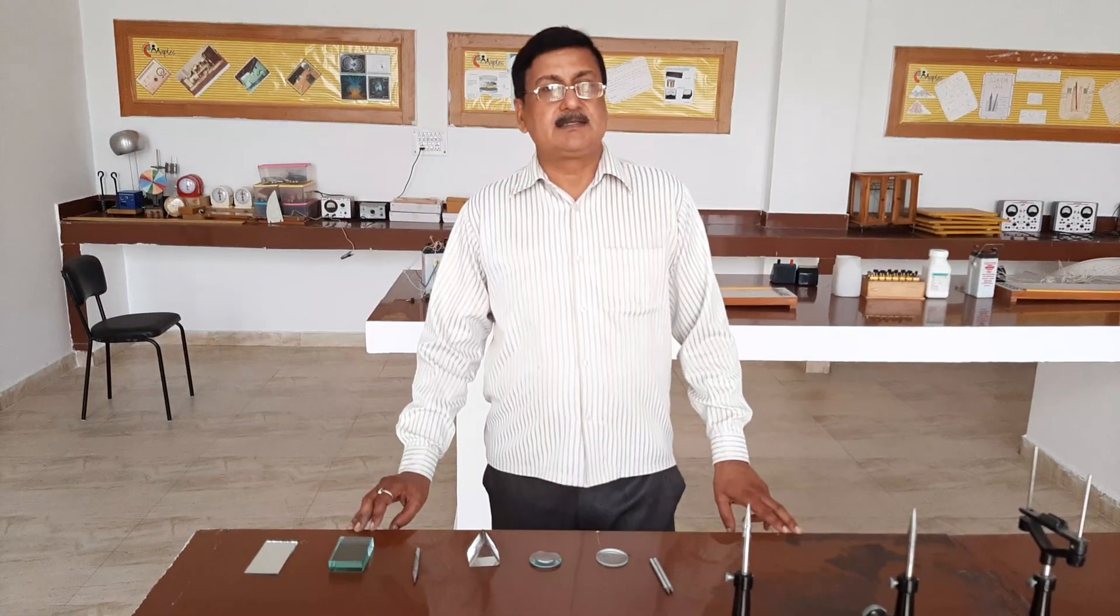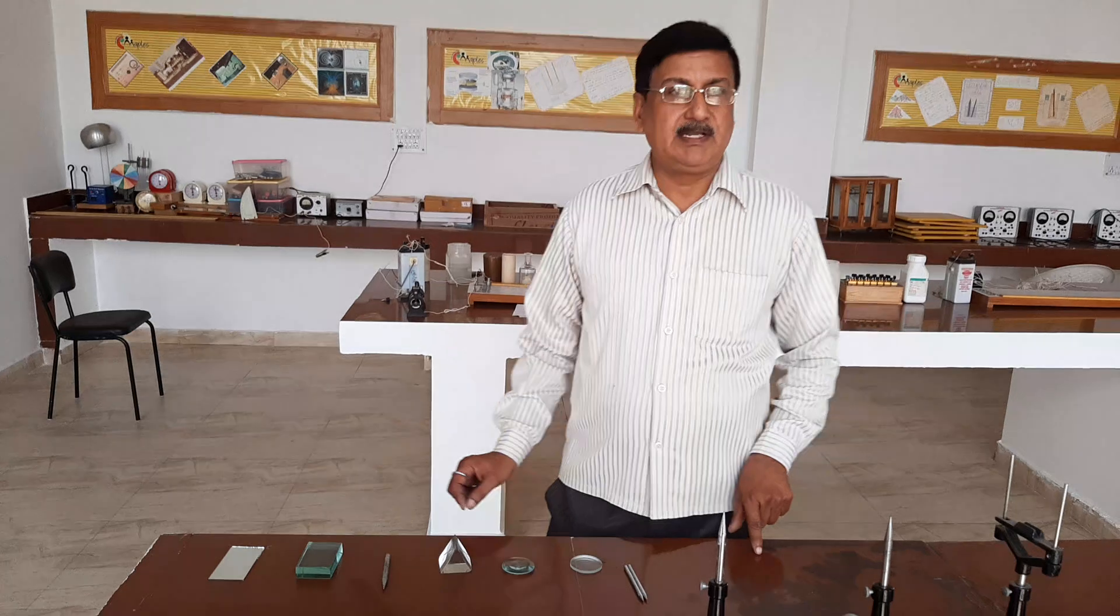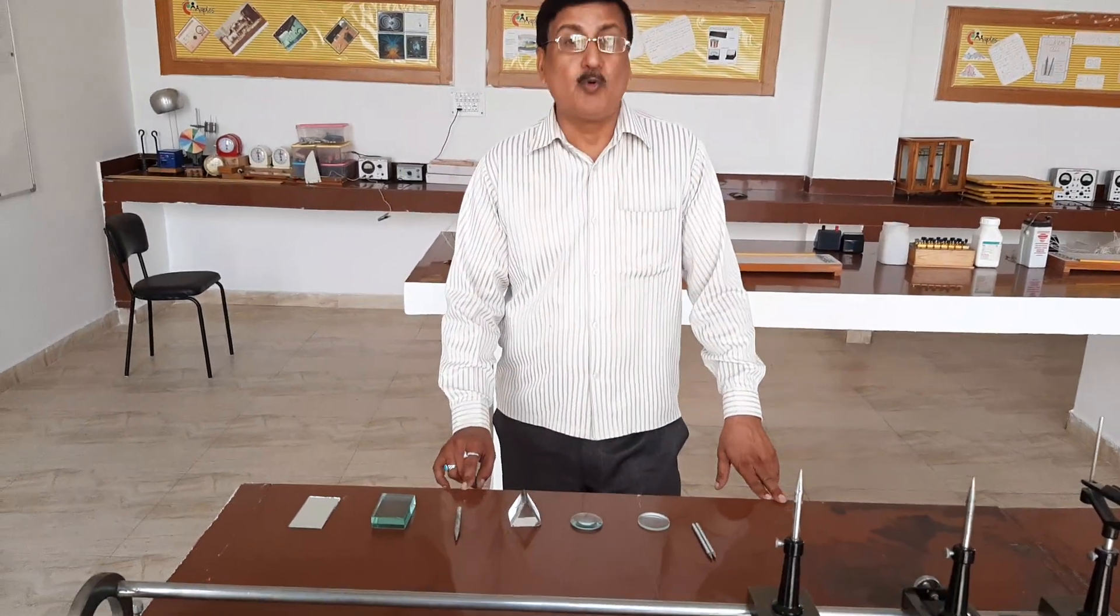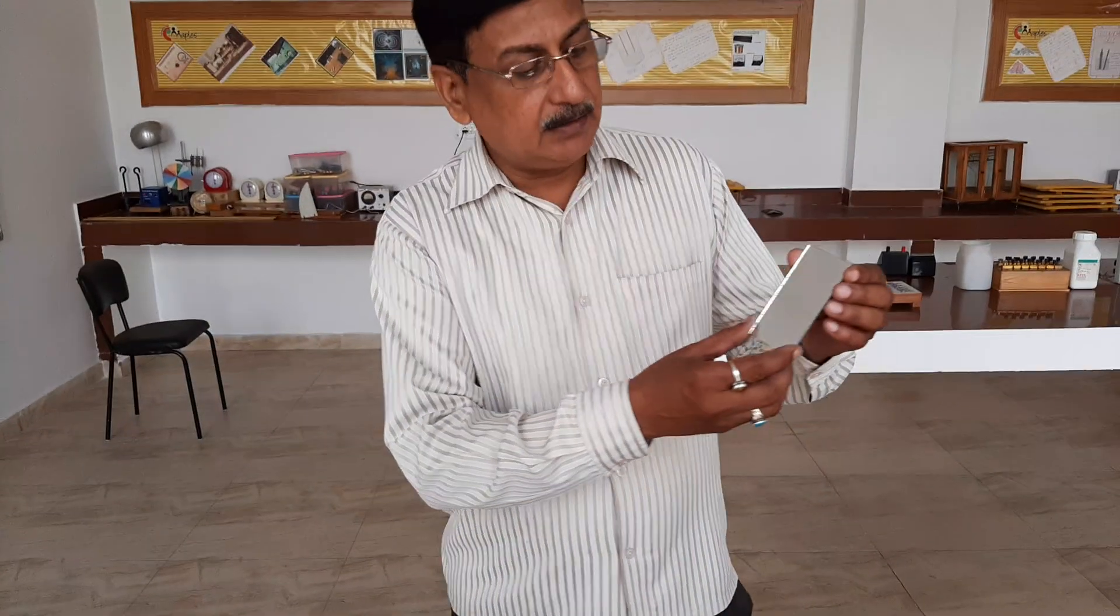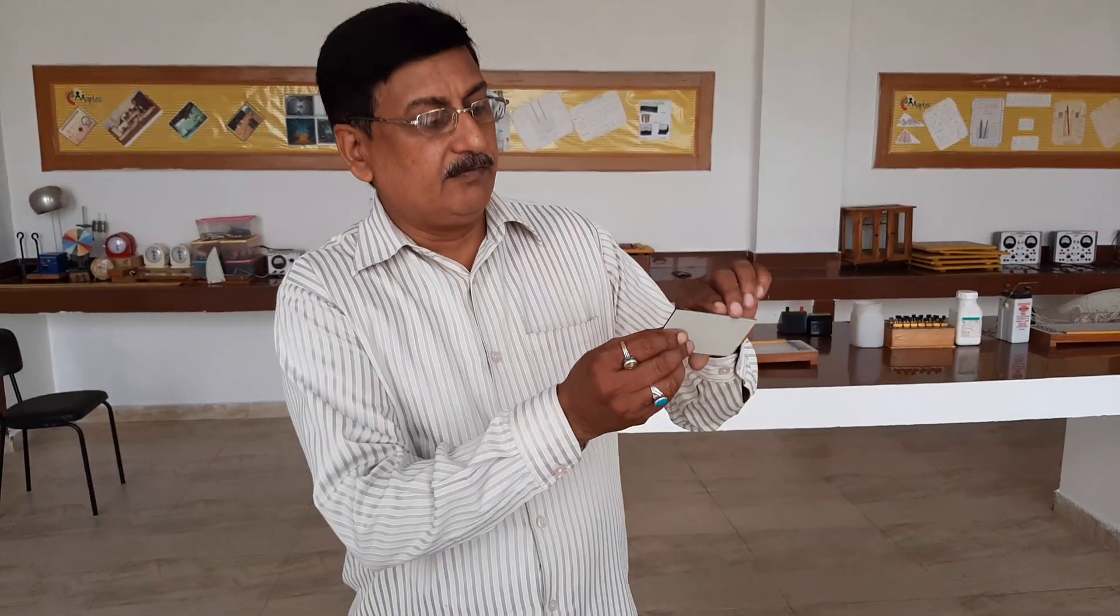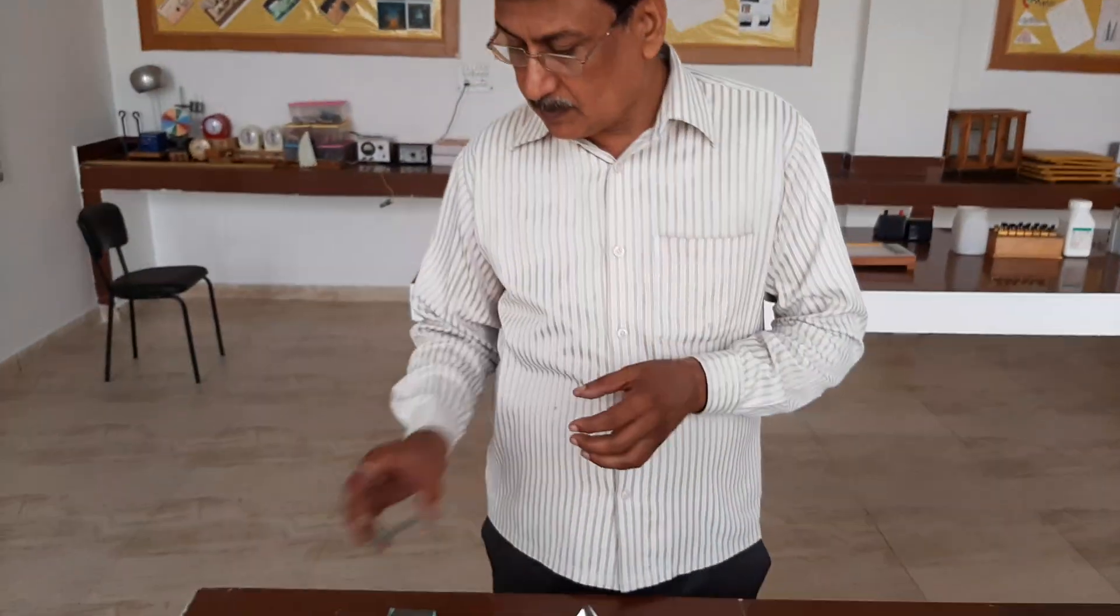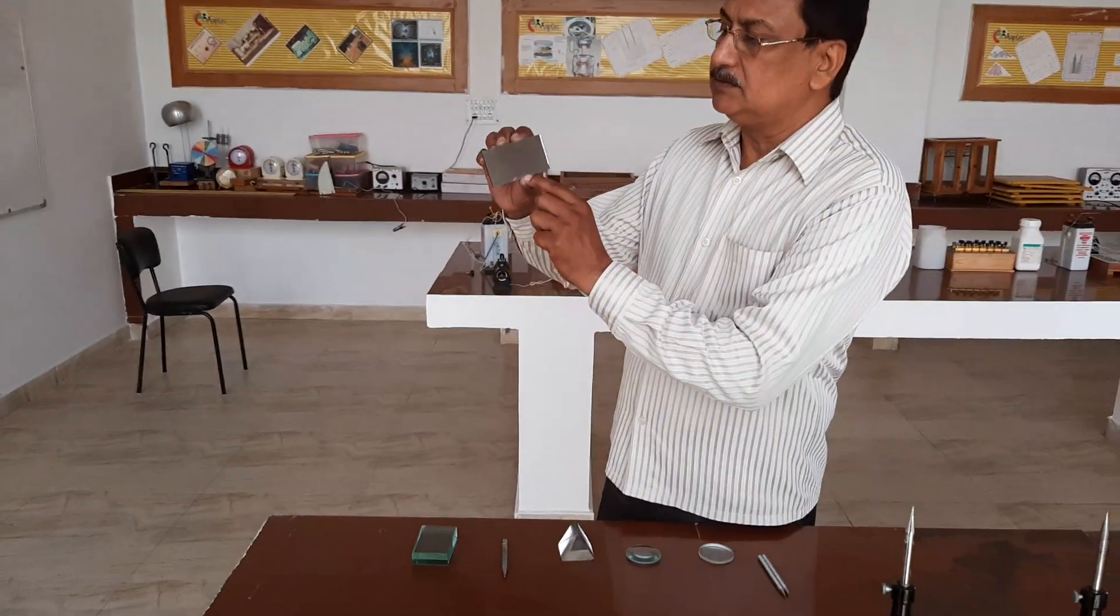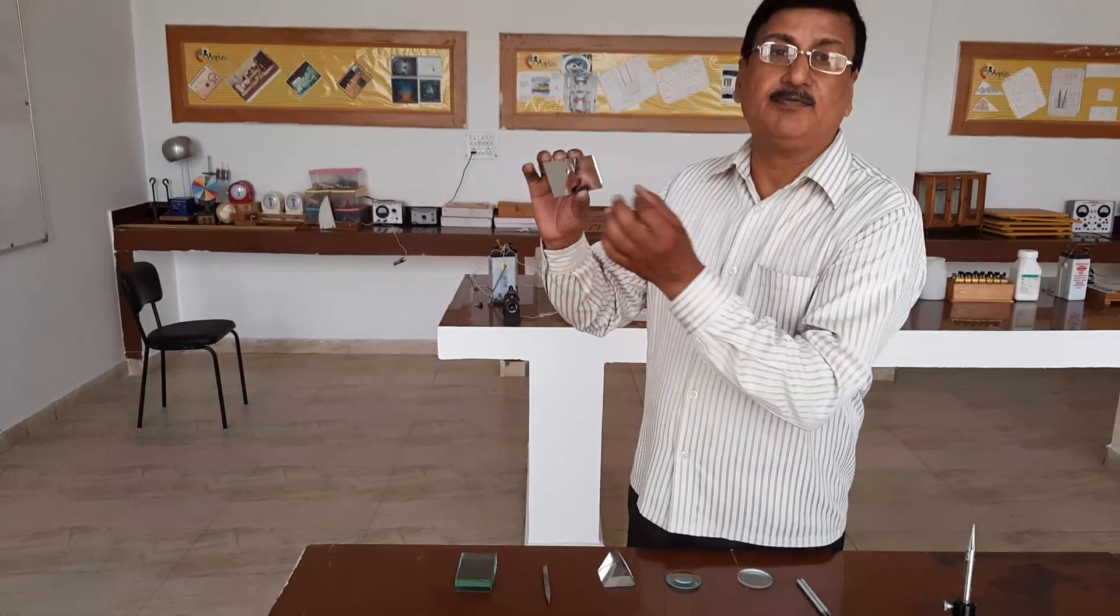So students, very good morning. Today we will discuss some optical instruments. This is a plane mirror and we use it in daily life to see the face. One side is painted by silver paint, another is the reflecting surface. The image formed by this mirror is of same size as the object.